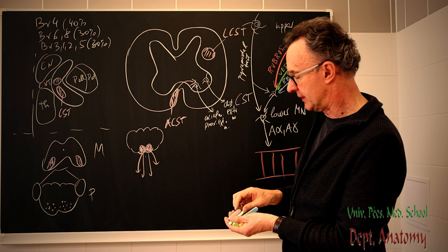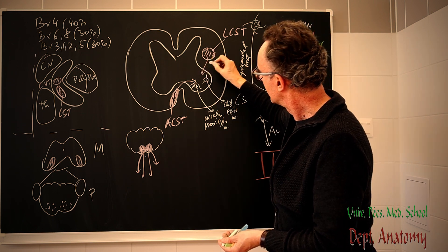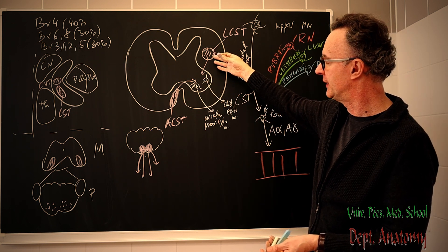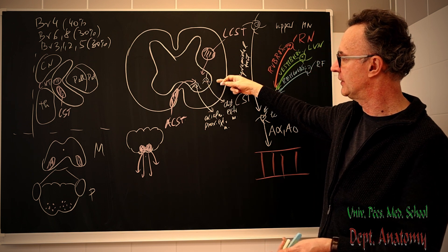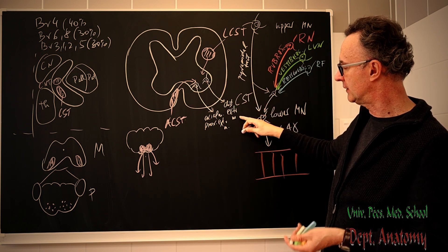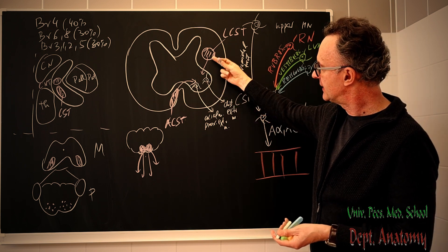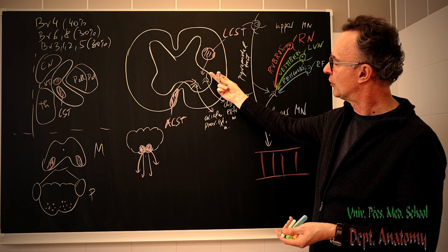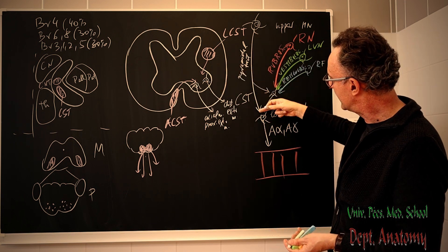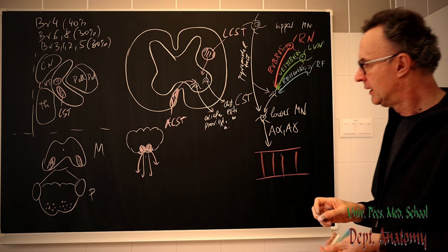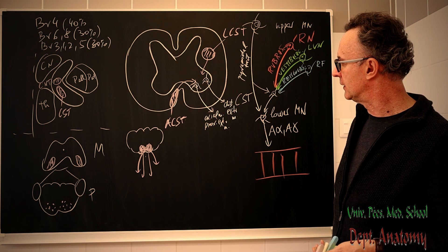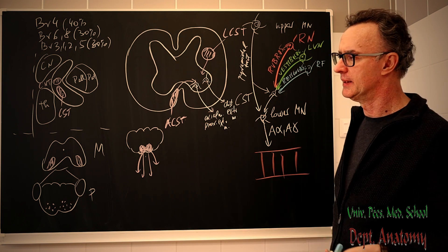The lateral corticospinal tract goes to the lateral subdivision of the ventral horn. That's why 85% of the fibers are here — because the lateral subdivision requires more precise innervation, as it controls distal fine-tuned muscles. It approaches the lateral subdivision from the lateral direction, mostly through interneurons, but in primates there is also a direct connection. This is the primary control of the lower motoneurons, which then directly innervate the skeletal muscles.